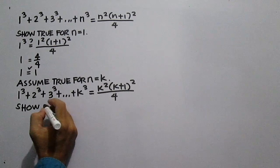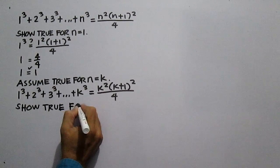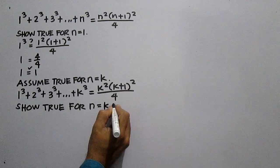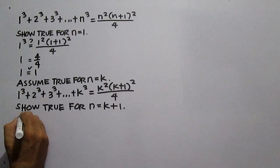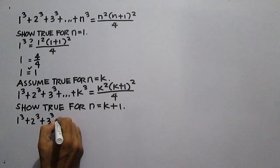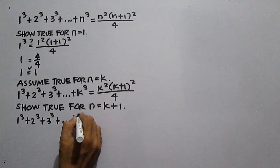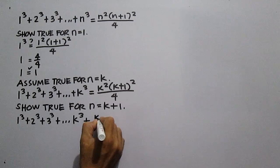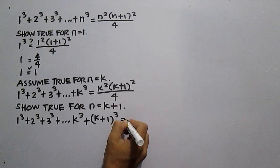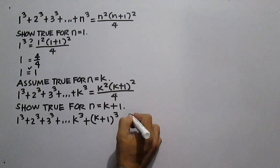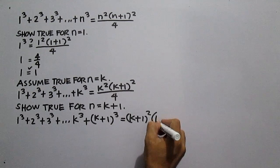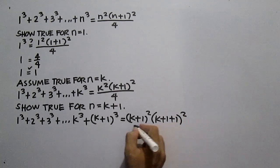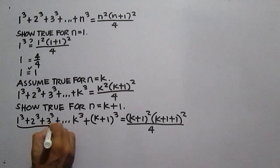Show that the statement is true for the next natural number — show true for n equals k plus 1. Copy the left hand side of the equation from our assumption: 1 cubed plus 2 cubed plus 3 cubed plus dot dot dot plus k cubed, then add the next natural number where n equals k plus 1: plus the quantity k plus 1 cubed. This should equal the square of the quantity k plus 1 times the square of the quantity k plus 1 plus 1, all over 4.